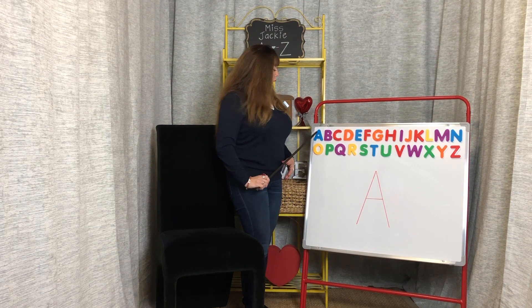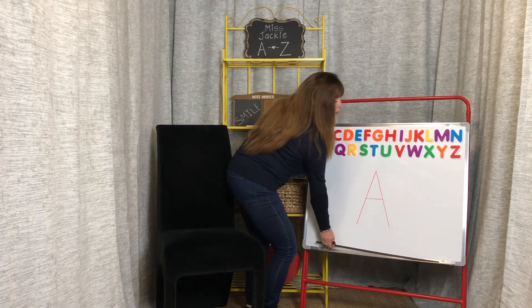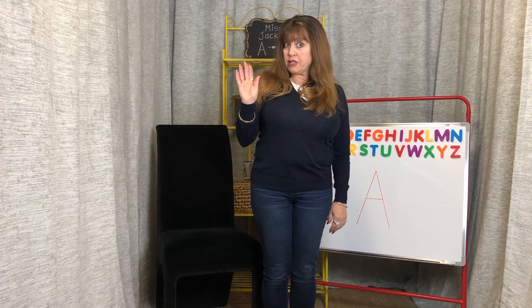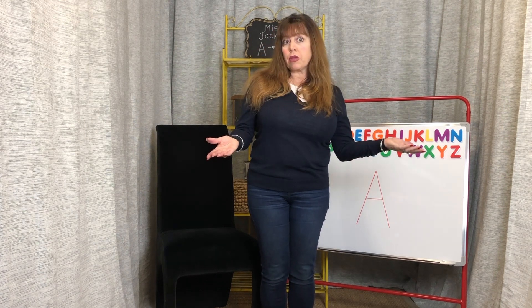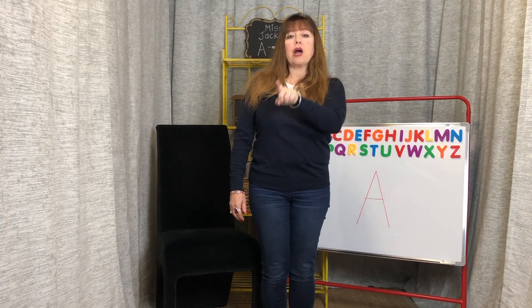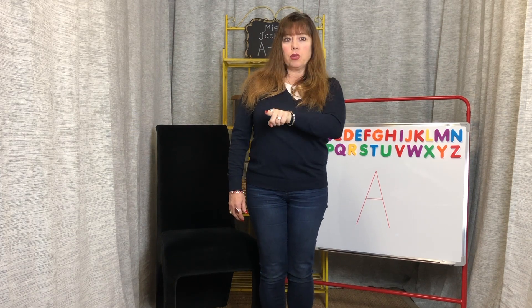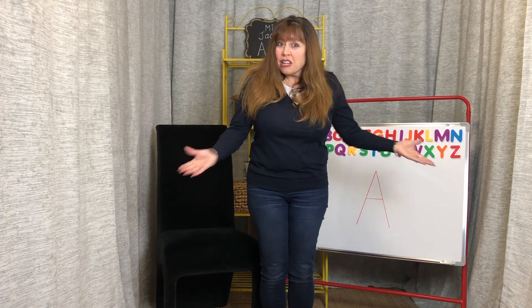A is the first letter of the alphabet, or number one. Now let's write the letter A together again. So face me — if you raise this hand, that is your right hand. If you raise this hand, that is your left hand. Now I want you to use the hand that you color with, you draw with, you write with. That's the hand I want you to use right now. And we're going to write the letter A. Down, down, across. Down, down, across. Excellent. Now you know how to write the letter A. Good for you.